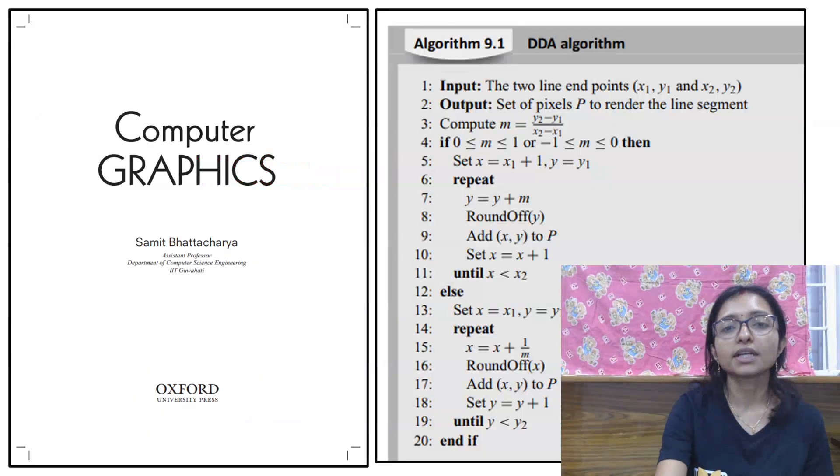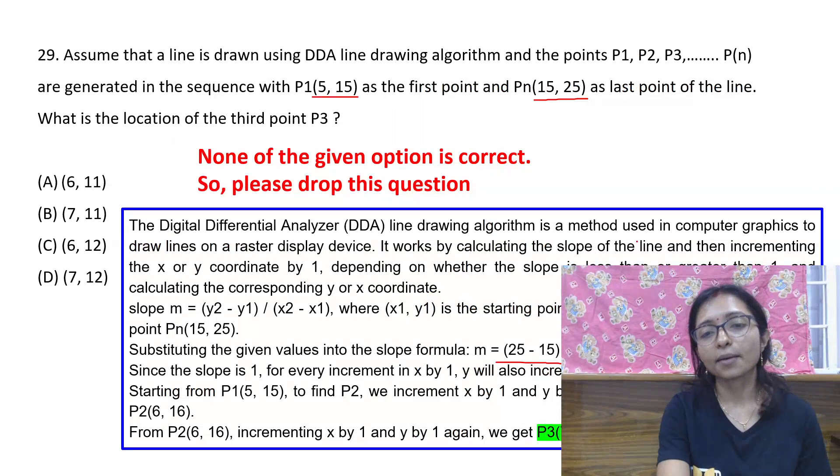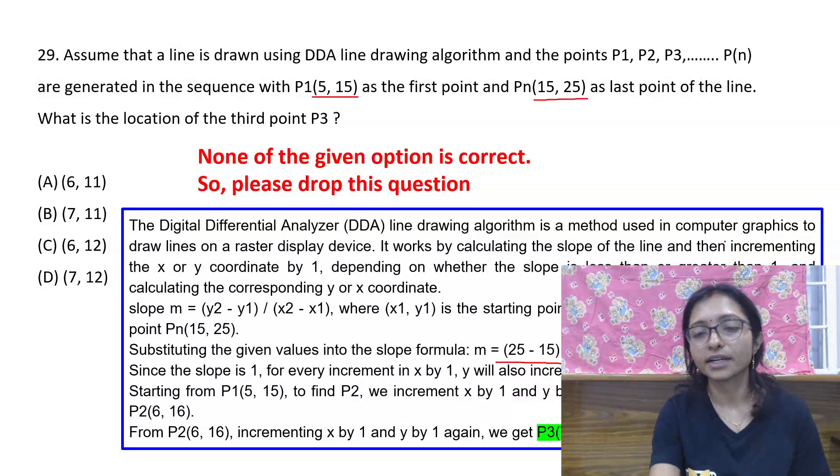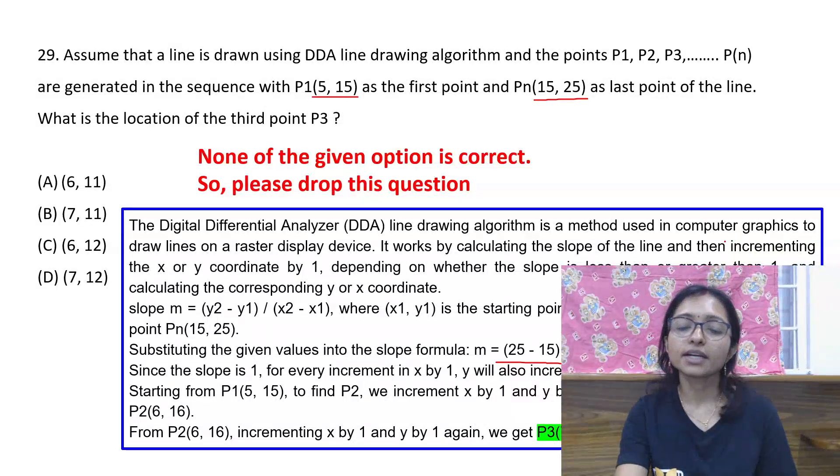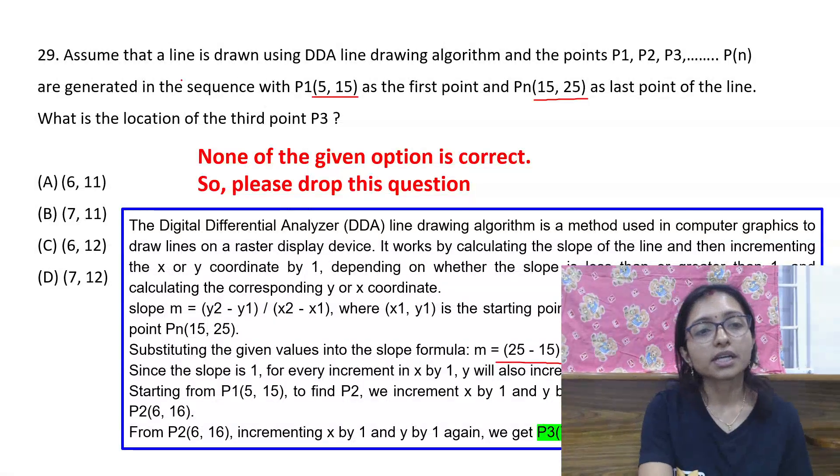According to the DDA algorithm, applying this, we are getting answer (7,17). (7,17) is the answer, but this answer is given wrong because none of the options are coming correct. So this question should also be dropped.